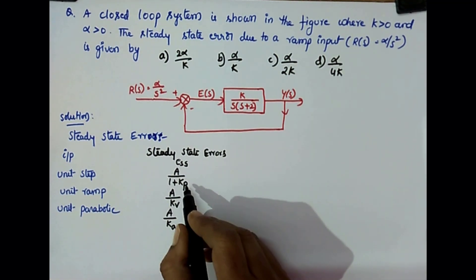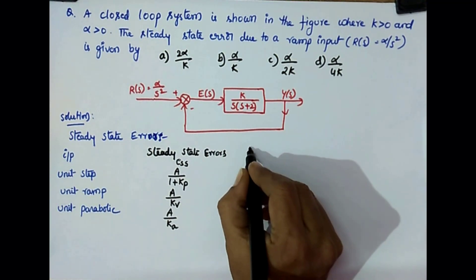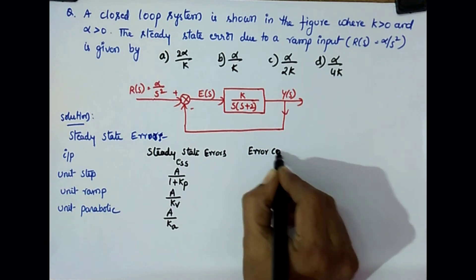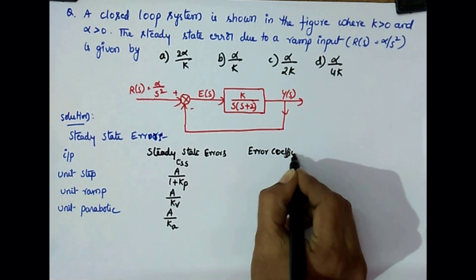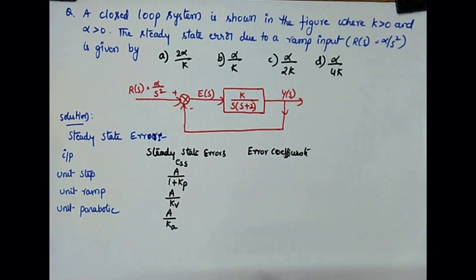And what are these Kp, Kv, Ka? These are called error coefficients.